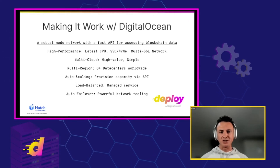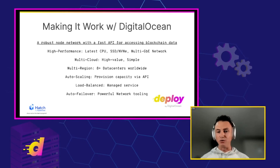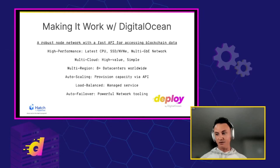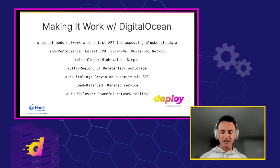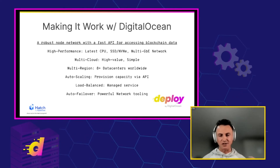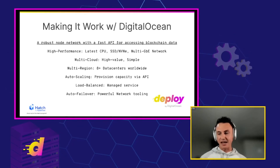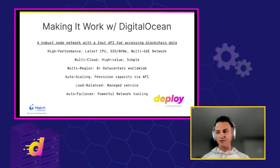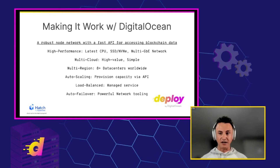Making it work with DigitalOcean — we want the latest CPUs, SSDs and NVMe storage, and multi-gigabit networks. We want things to be high value and super simple to use. We need to be multi-region — West Coast US, East Coast, Toronto, London, Amsterdam, Frankfurt — we need to be everywhere. It needs to be auto-scaling, so provision capacity by API. We have health monitoring on the back end which monitors for latency, block height, response time, and then scales the network up and down based on a number of parameters.